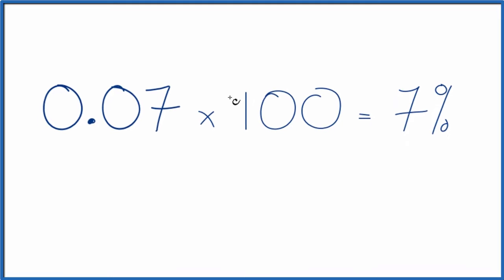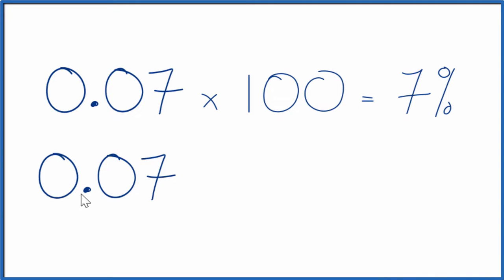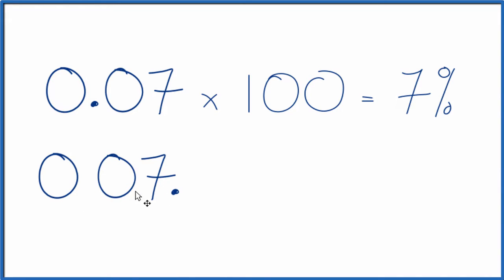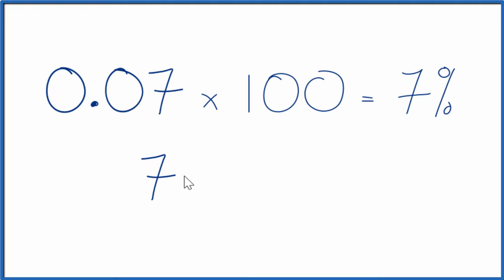The other way you can do this is we take 0.07, that's our decimal, and we're gonna move the decimal place two places to the right, which is really just multiplying by 100. One, two — that leaves us with 007. We don't need the zeros since they're in front there, and we don't need the decimal point. We end up with seven percent, just like we found before.